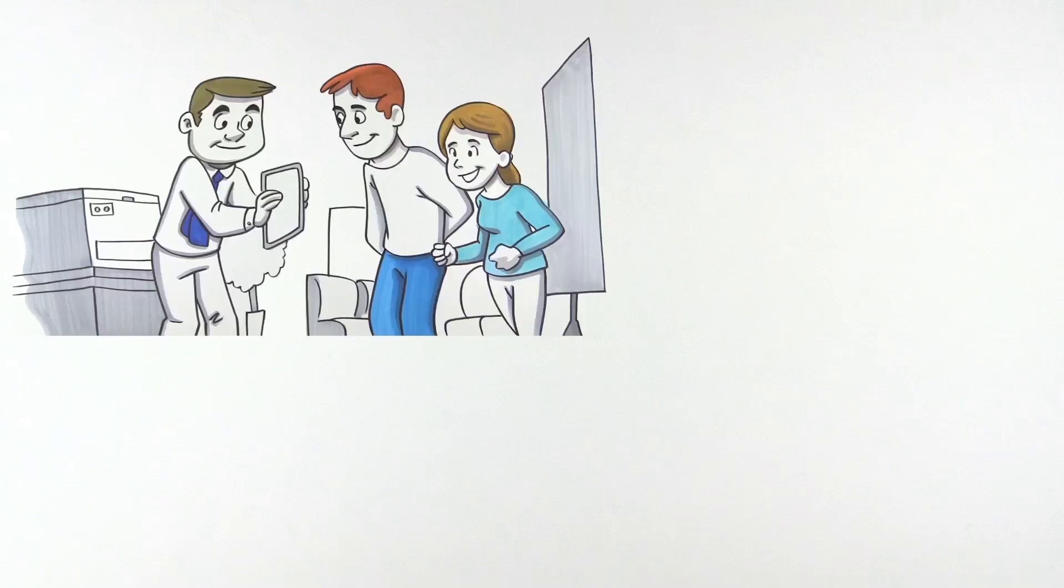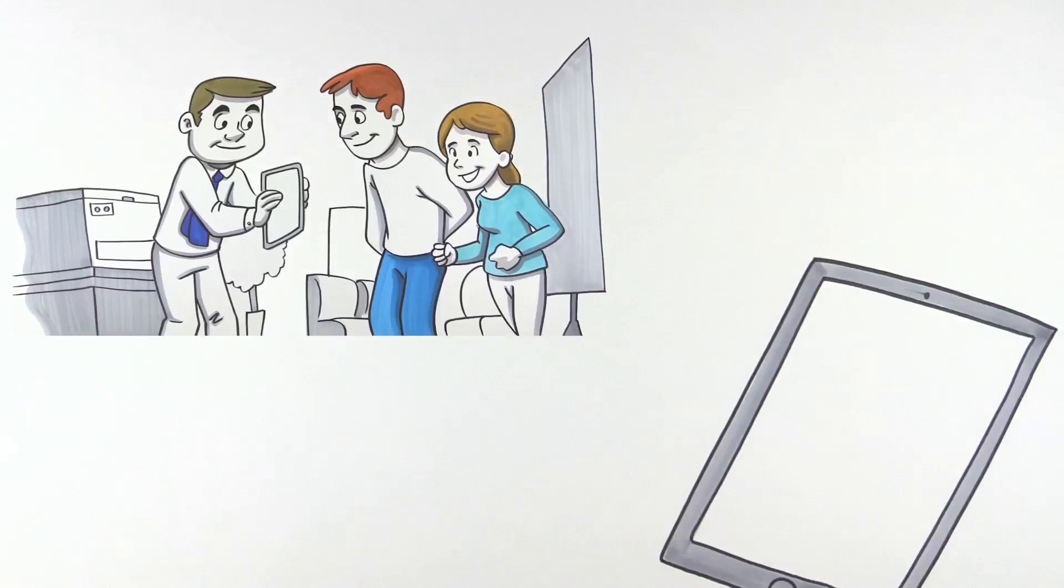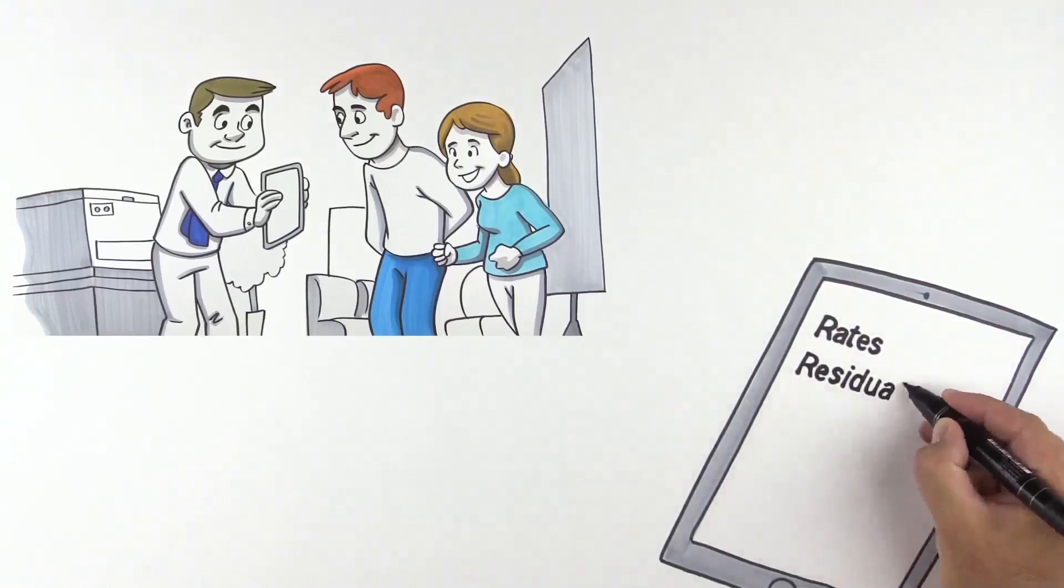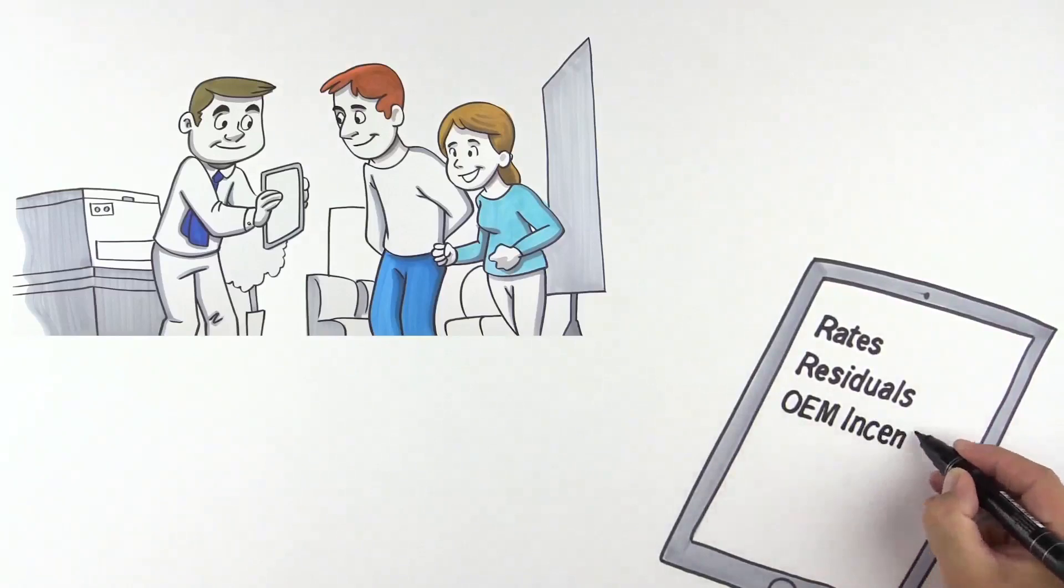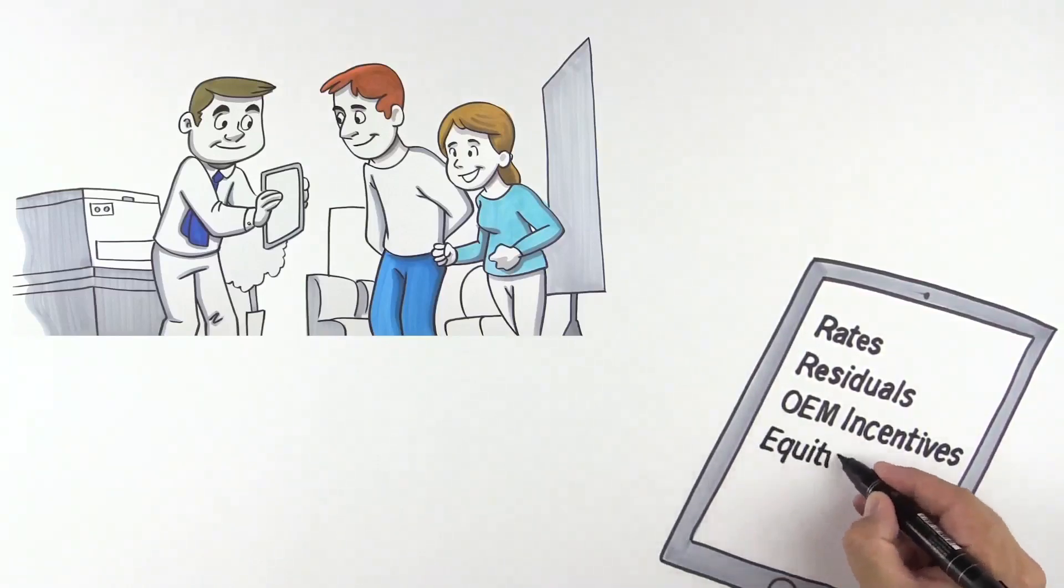When they get back to the dealership, your salesperson hands your customer a tablet so they can accurately and securely enter their own personal information into a credit check application. This automatically creates the first pencil for default loan and lease options, pulling in rates, residuals, rebates, incentives, customer equity, and trade-in value from your pre-owned manager.